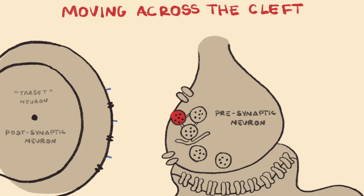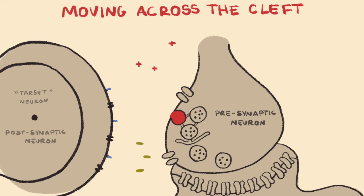Once released into the synaptic cleft, the neurotransmitters diffuse across the cleft and bind to specific ligand-gated receptors on the membrane of the postsynaptic neuron. Upon neurotransmitter binding, ion channels will open and specific ions will flow into the postsynaptic neuron down their electrochemical gradient.